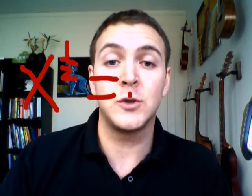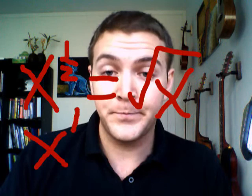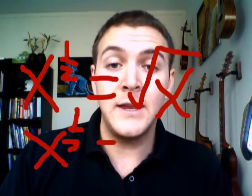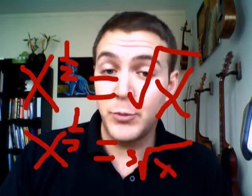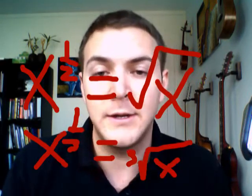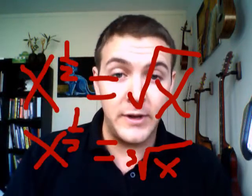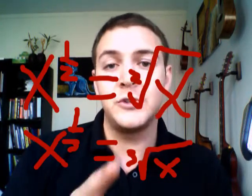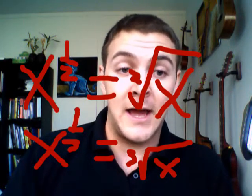Next comes the fraction exponents. If you have x to the half, it always equals the square root of x. If you have x to the third, it equals the third root of x. These are pretty rare but they do come up, and you need to know them. Remember that square root is really the second root — the two is just implied. So whatever the denominator is, that's what goes on the outside.